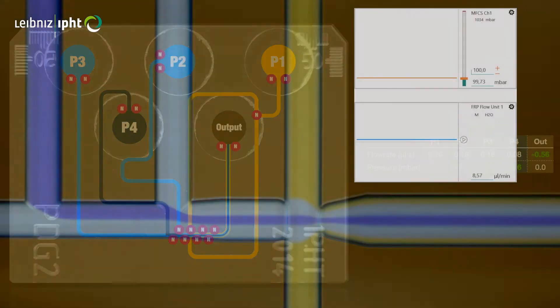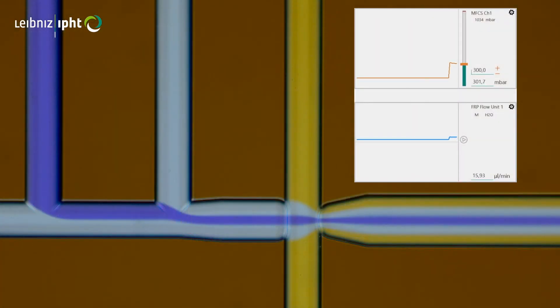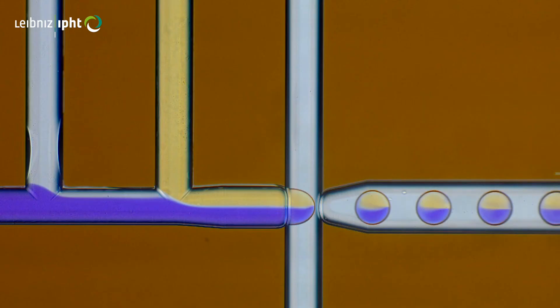With our microfluidic chip, we can create laminar coflow of up to four colors or droplets that vary in size and composition.